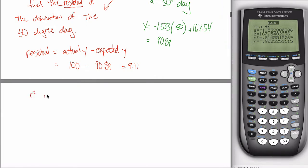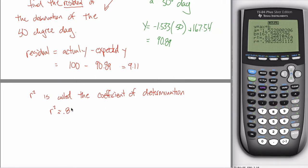R-squared is called the coefficient of determination. In this example, r-squared is approximately equal to 0.8146, rounded to four decimal places. You should expect me to ask you to calculate the coefficient of determination. The hardest part is understanding that r-squared is called the coefficient of determination, whereas r is called the correlation coefficient — it would be really easy to confuse those two.